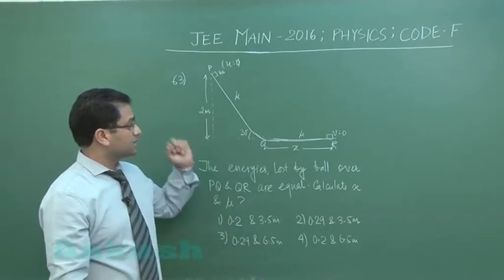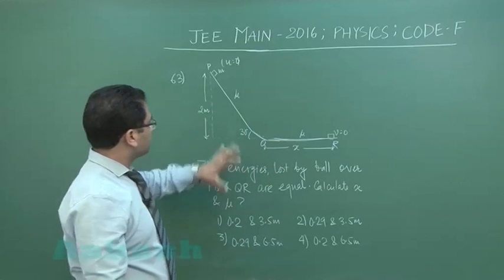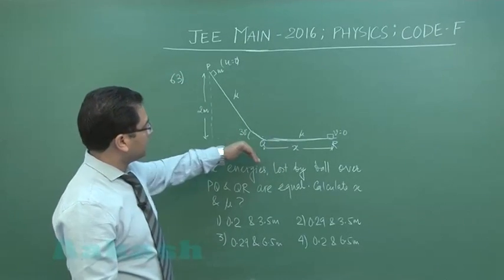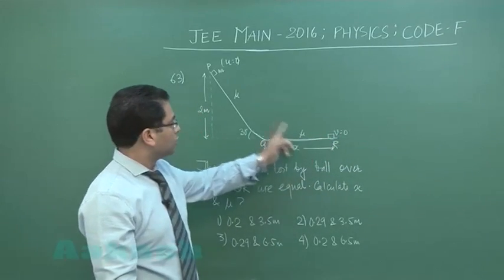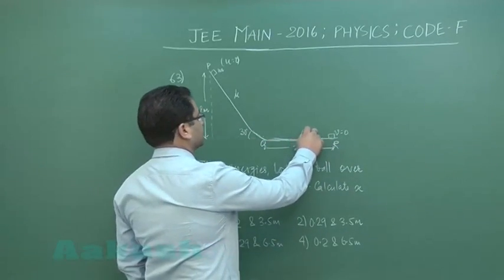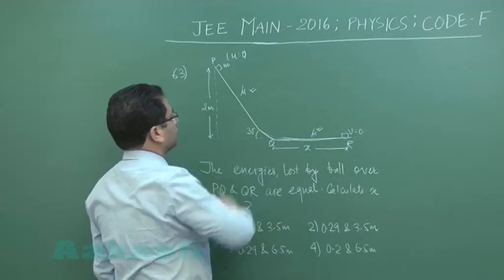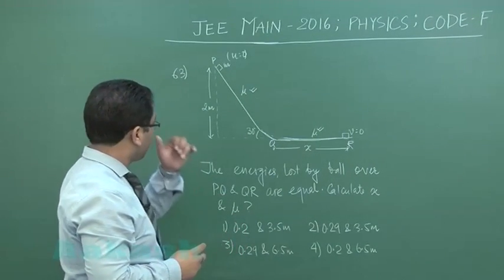Okay, now question number 63. Just look at the figure. There is an inclined plane that finally ends into a horizontal plane. Both are rough and both the surfaces have the same coefficient of friction, which is mu.